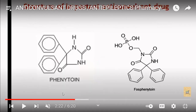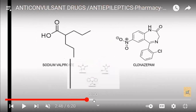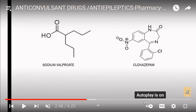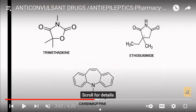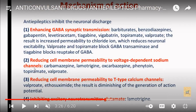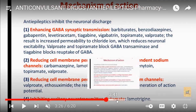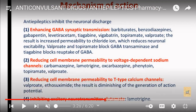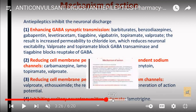These are the structures of phenytoin and fosphenytoin, sodium valproate, clonazepam, trimethadione, ethosuximide, and carbamazepine. The different mechanisms of action on which these drugs act include: enhancing GABA activity, reducing cerebral membrane permeability to voltage-dependent sodium channels, reducing cell membrane permeability to T-type calcium channels, and inhibiting excitatory neurotransmitters.